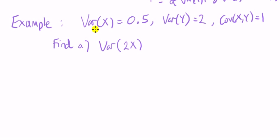Let's have a look at a few examples to show you how the variance operator works. Okay, we have variance of x is a half, variance of y is two, the covariance of x and y is one. We want to find the variance of two times x.